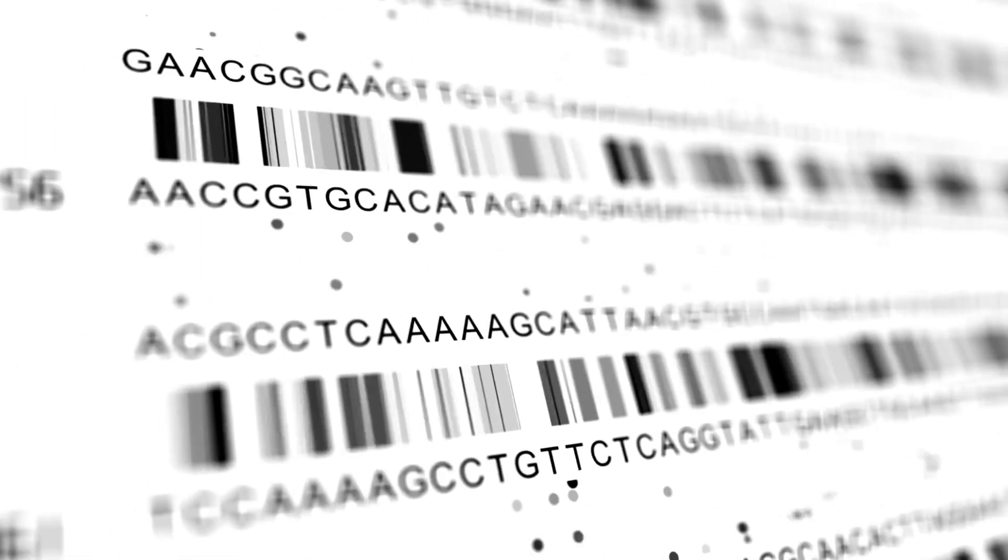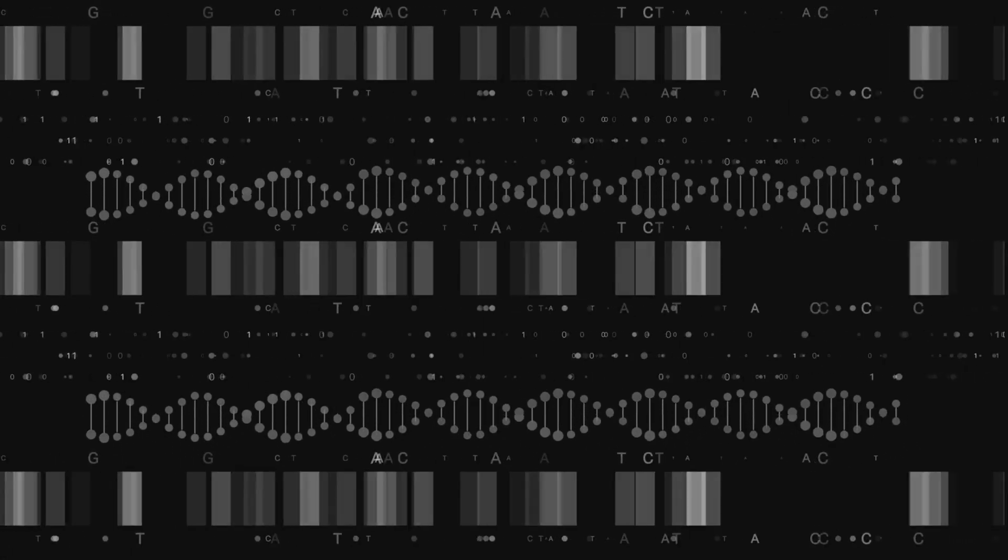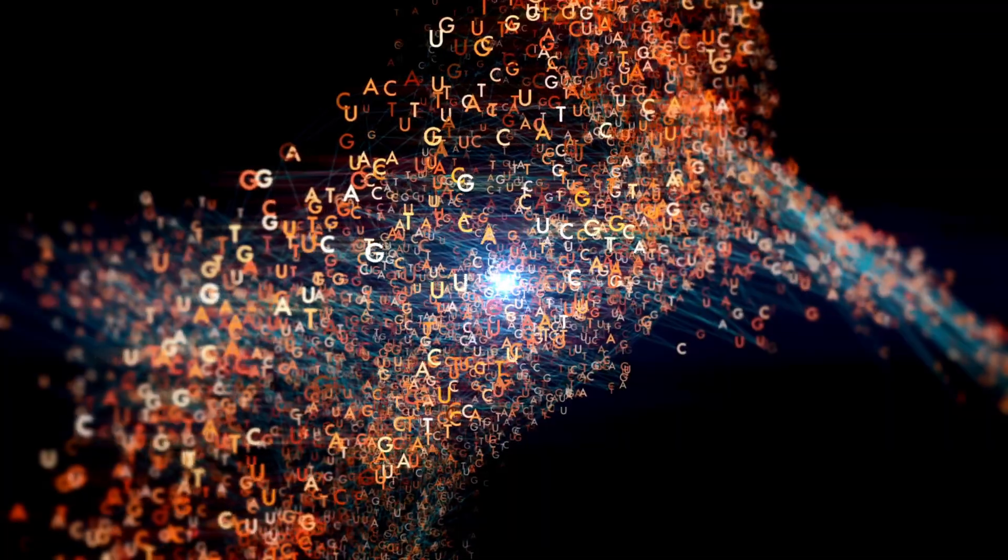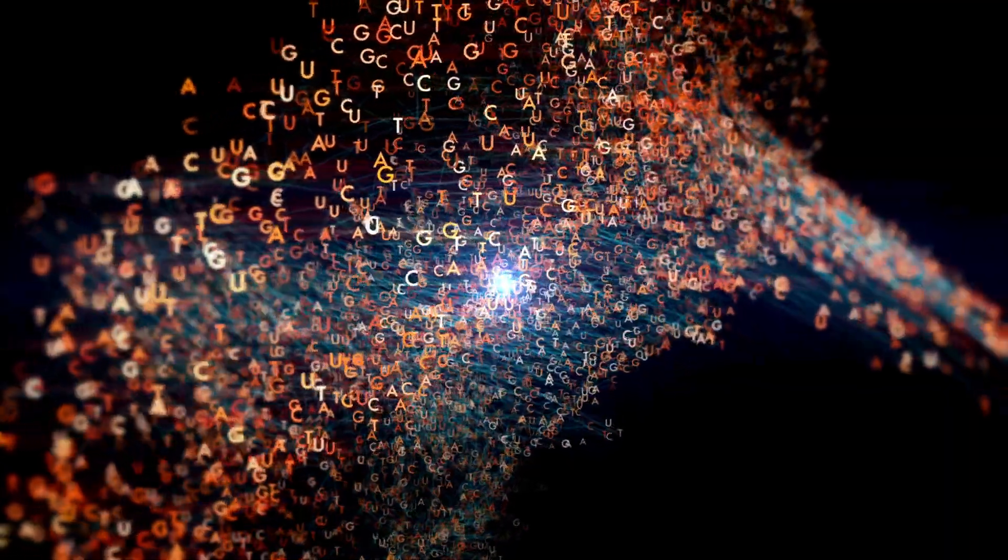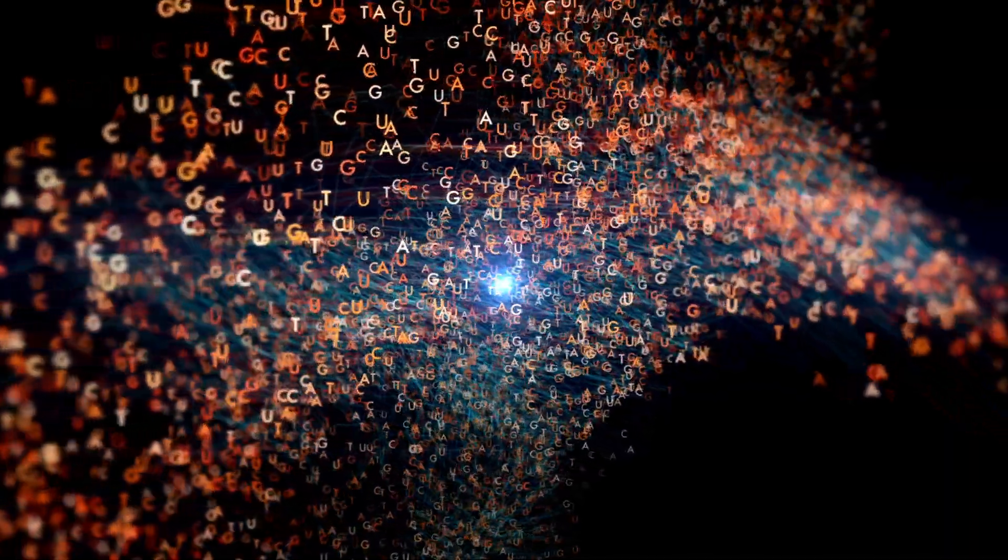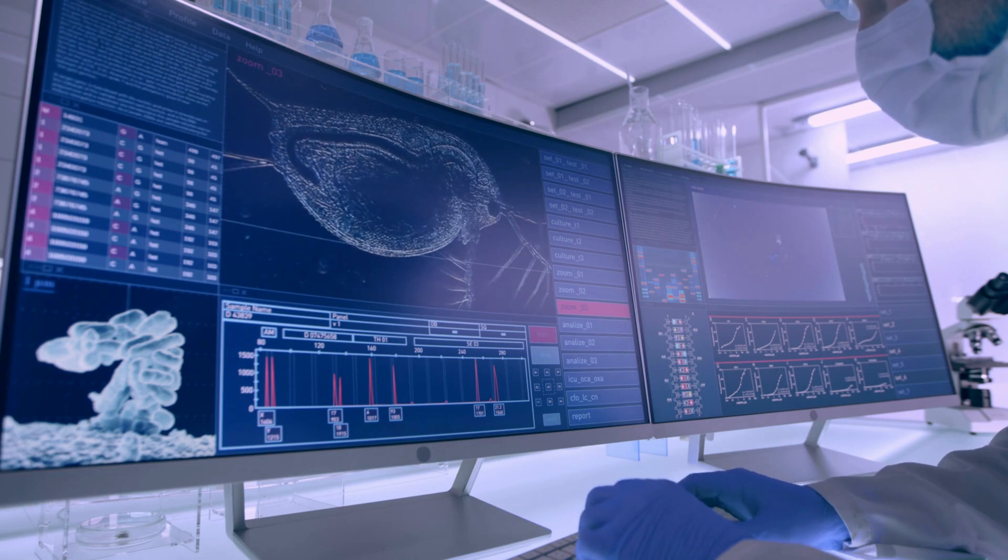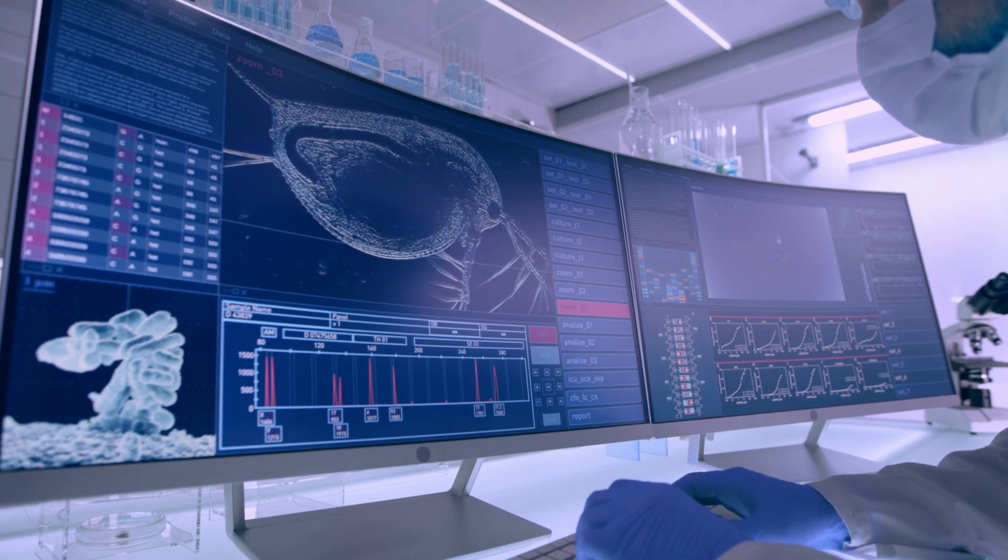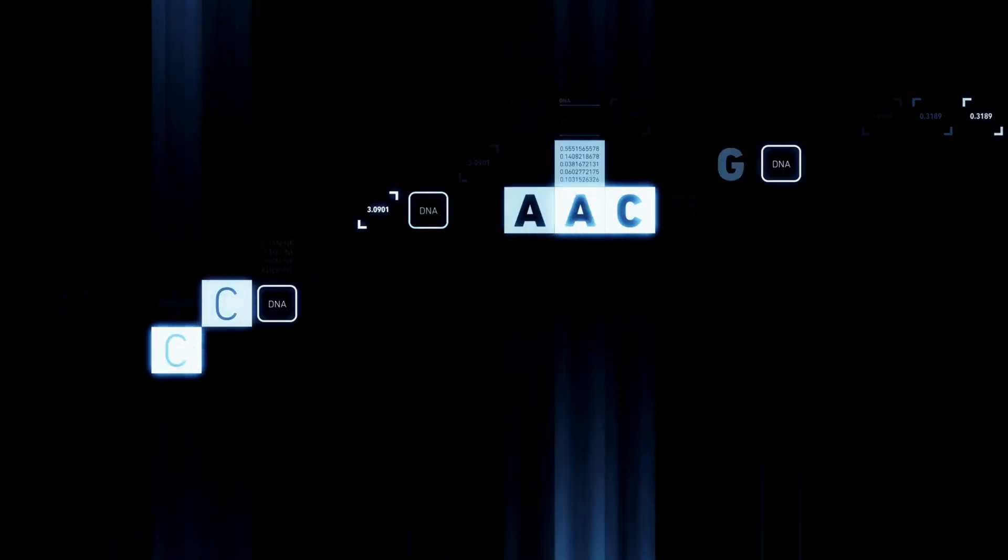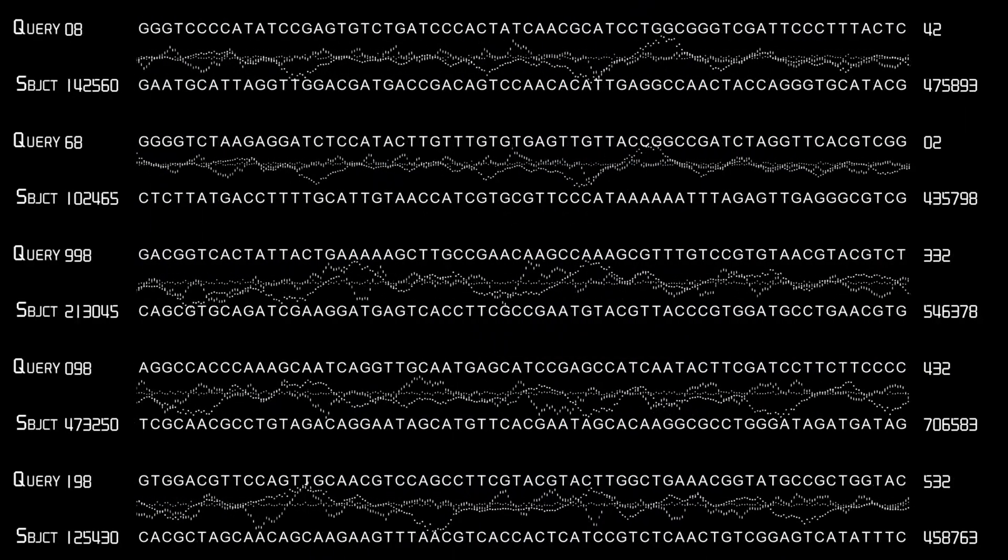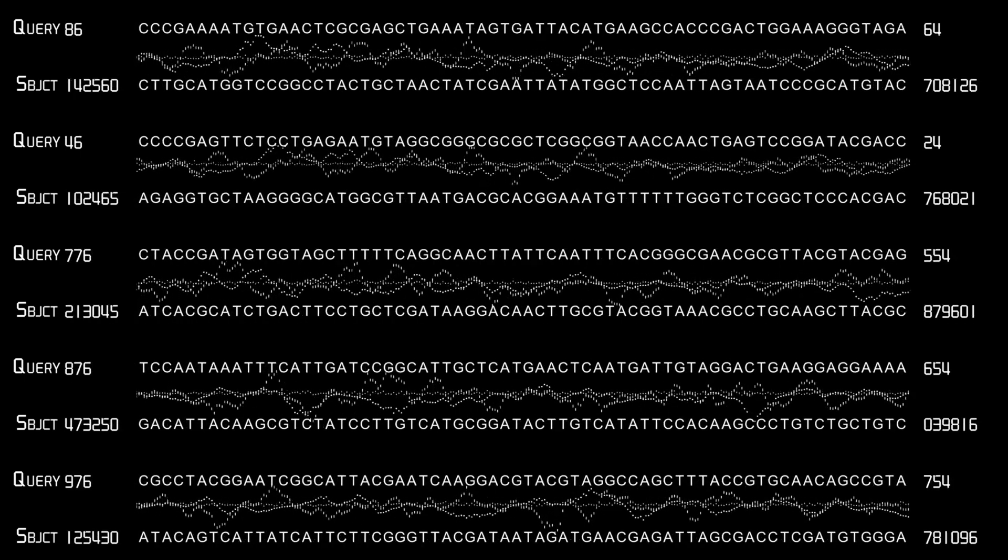Applications of DNA sequencing are numerous and varied. DNA sequencing has been used in medicine to diagnose genetic diseases, determine the genetic basis of cancer, and personalize medical treatments. In agriculture, DNA sequencing has been used to improve crop yields and identify genetic traits for breeding purposes. In environmental science, DNA sequencing has been used to identify microbial communities in soil and water, track the spread of invasive species, and monitor biodiversity. DNA sequencing is also a crucial tool in research to understand the genetics of various organisms and diseases.